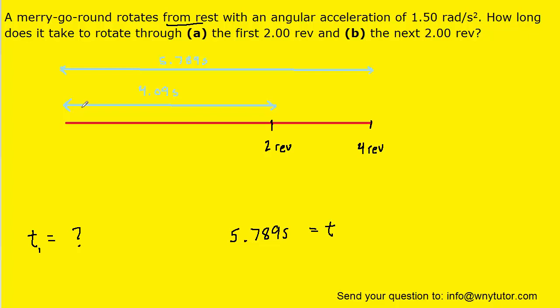Recall from part A of the question that it took the merry-go-round just over four seconds to spin the first two revolutions. And then we just figured out that it takes a total of 5.789 seconds to go a full four revolutions. The question in part B really wants to know the time to go from the first two revolutions to the next two revolutions. So, we're really looking for this time.